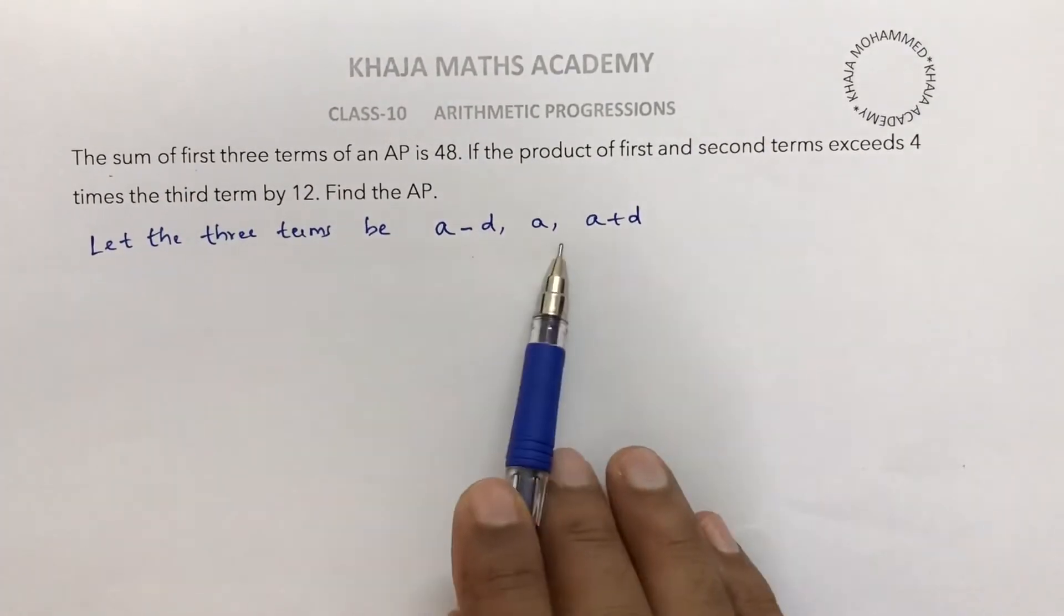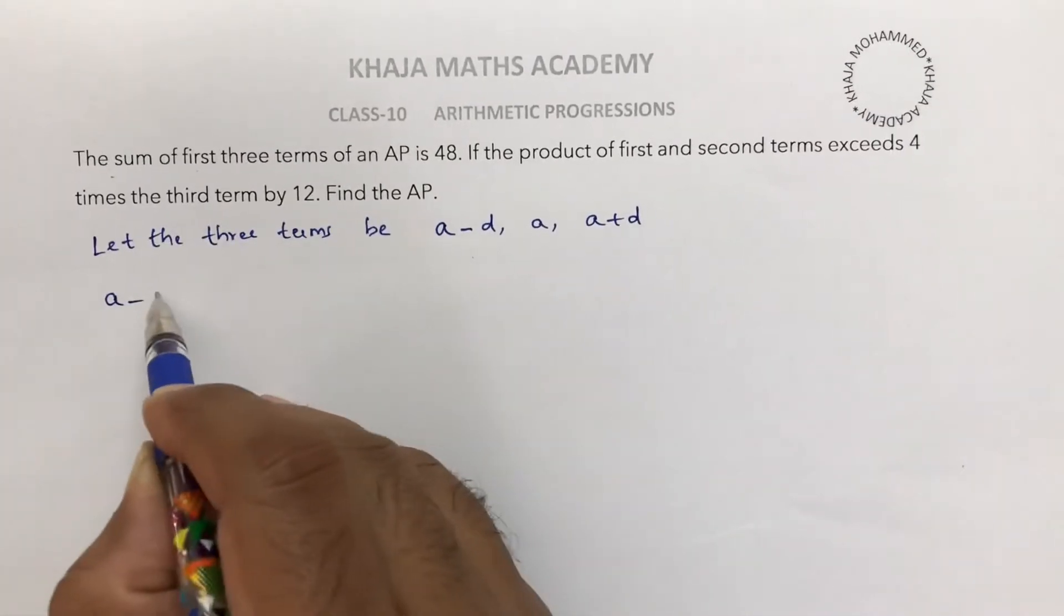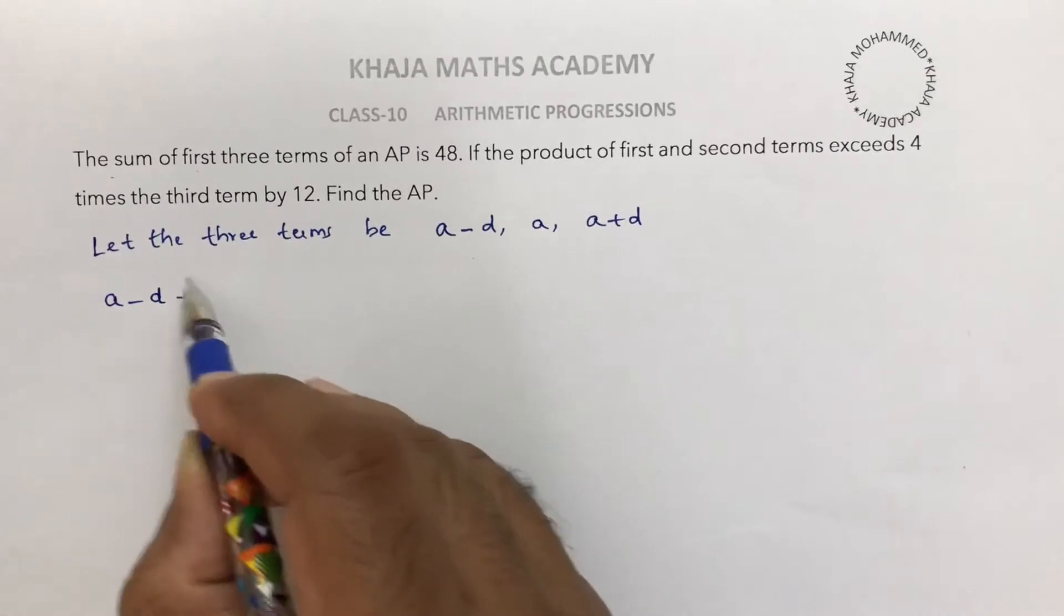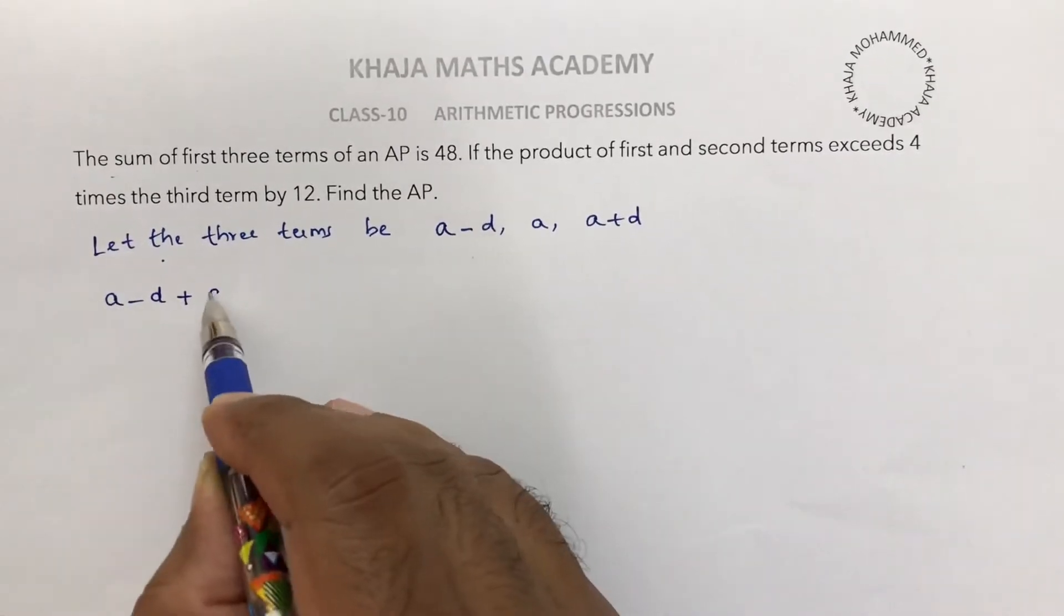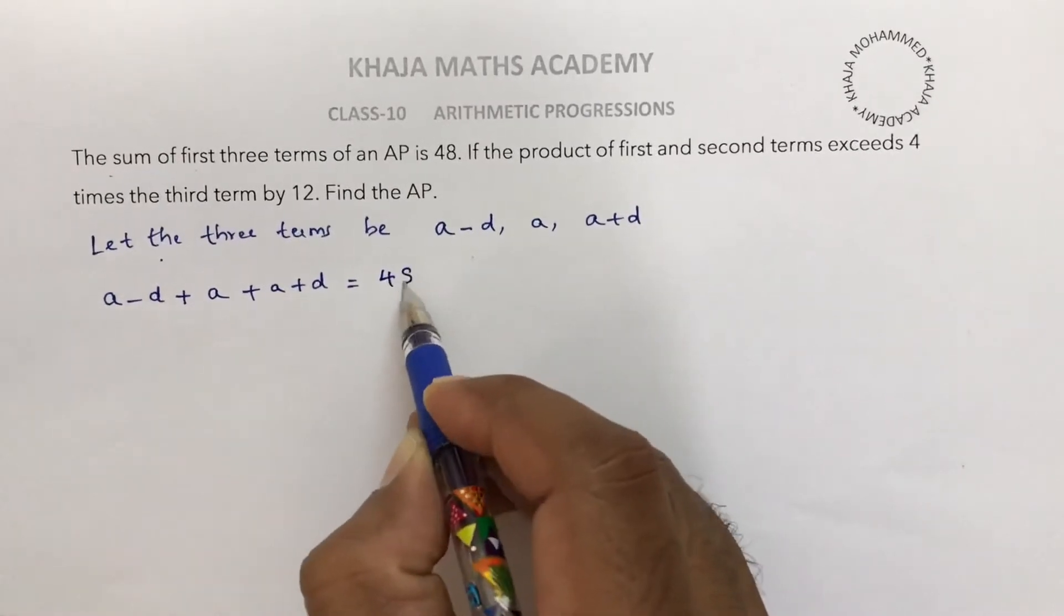If you take it this way, the problem becomes easy. Now, a-d plus a plus a+d, the total sum is 48. I am adding three terms and the sum is 48.